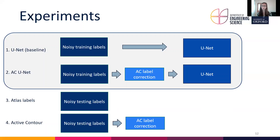Because for the fetal brain dataset we have manual labels available for our test set, we also performed two additional evaluations. The third experiment is a direct evaluation of the atlas labels against the manual labels in the test set, giving us an idea of the level of error in our atlas labels. The fourth applies active contour label correction directly to the atlas labels in the test set and evaluates the result, instead of training a U-Net with them.